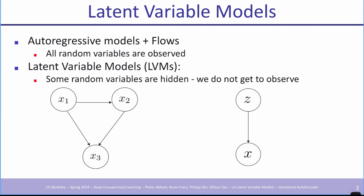In latent variable models, we will have the assumption that maybe there's a lower-dimensional piece of information that really encodes what is incarnated in x. And if we can capture that lower-dimensional simpler representation z, that's a much more compact representation. In that space, it might be easier to interpolate between data points, compress the data, or learn a classifier on top.